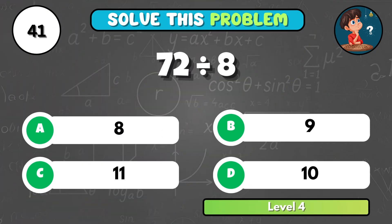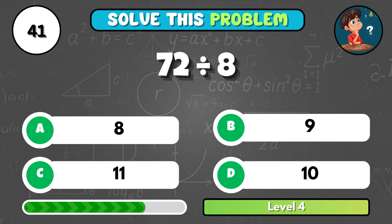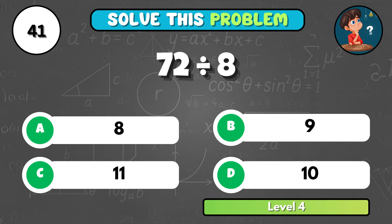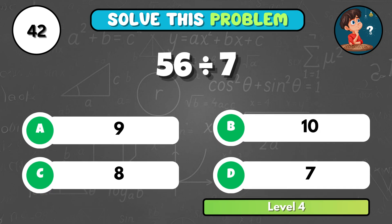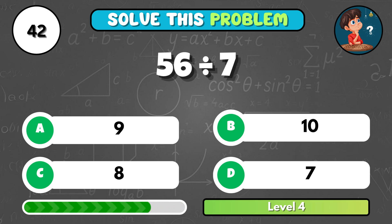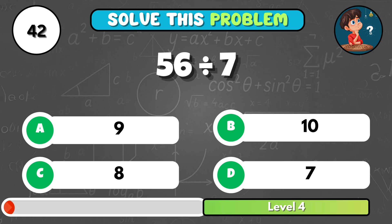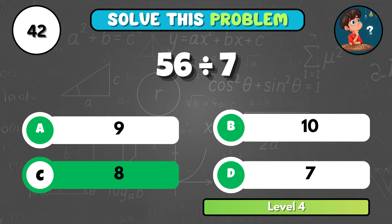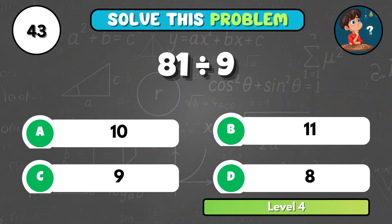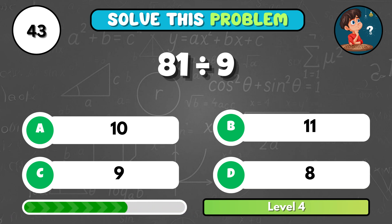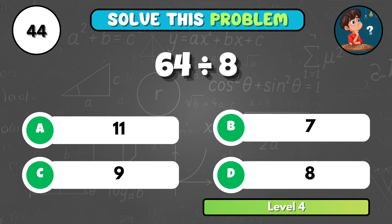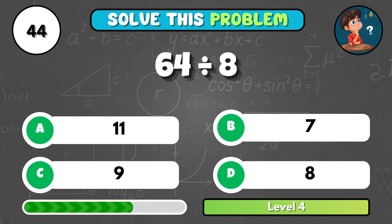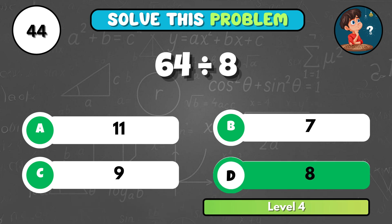We're in challenge mode now. What's seventy-two divided by eight? It comes to B, nine. Can you handle this one? Fifty-six divided by seven equals what? That's C, eight. Big numbers ahead: eighty-one divided by nine is... It's C, nine. Here's another tough one — sixty-four divided by eight equals what? That's D, eight.